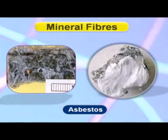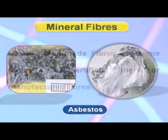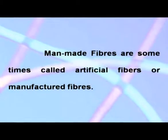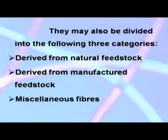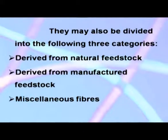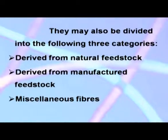Mineral fibers: Asbestos is the only naturally occurring mineral fiber. Man-made fibers are sometimes called artificial fibers or manufactured fibers. They may also be divided into the following three categories: derived from natural feedstock, derived from manufactured feedstock, and miscellaneous fibers.